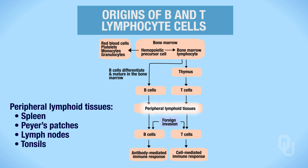Once the B cells enter these lymphoid tissues, they're going to hang out and stay in that area, waiting for an invasion by some foreign component. So once there's an invasion—let's say a bacterial invasion—the B cells then leave the peripheral lymphoid tissues. Not all of them leave at once; you'll always have some left behind. Those B cells that leave will mount what's called an antibody-mediated immune response. You need to link B cells with causing an antibody-mediated immune response.